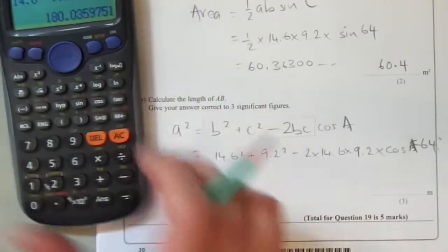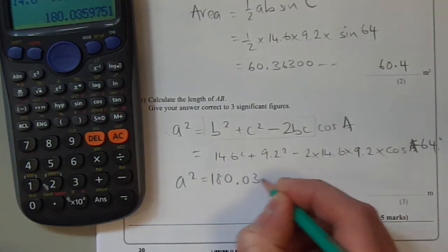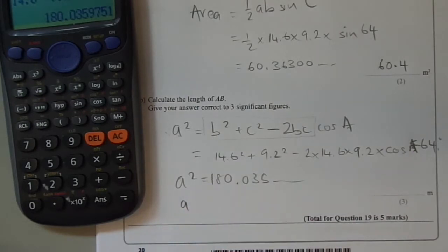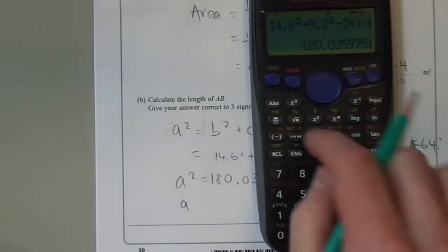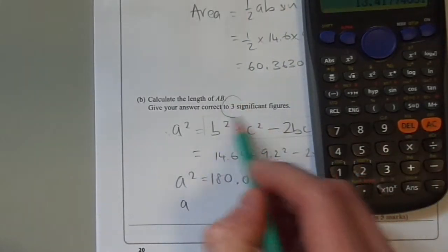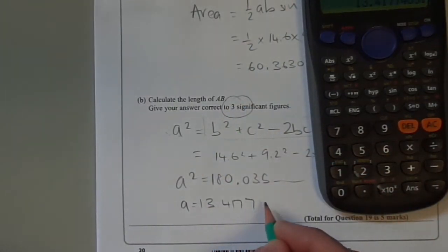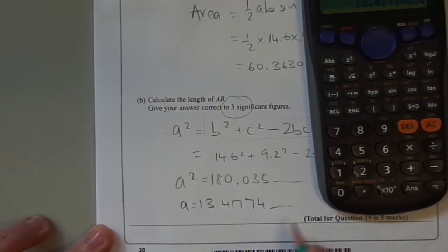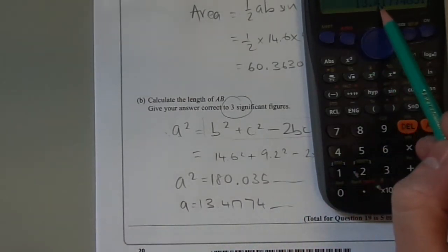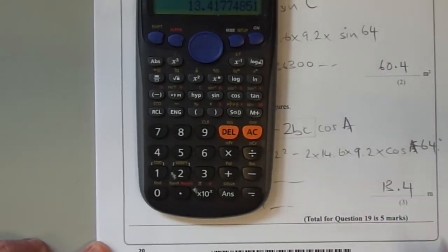But that's not our final answer. That's what A squared is equal to. So in order to find the length of the side A, we need to square root this answer. A is equal to 13.4174 and so on. First, second, third significant figure: 13.4 metres.